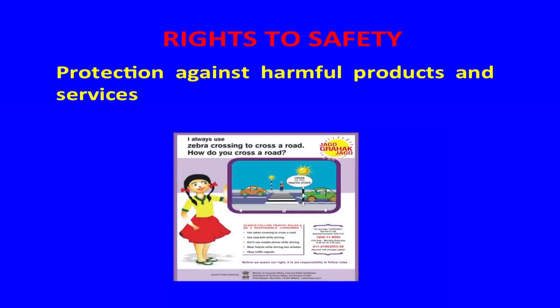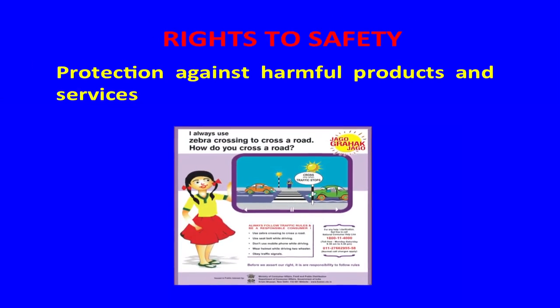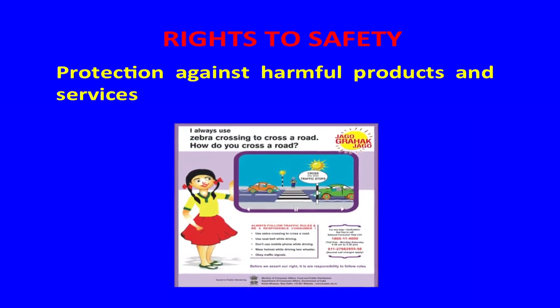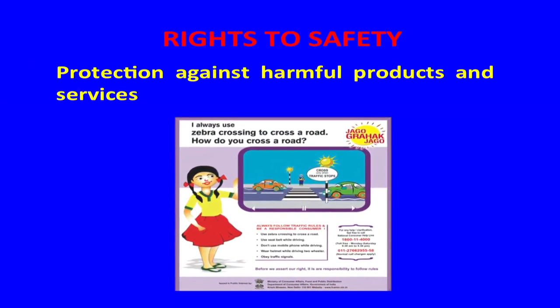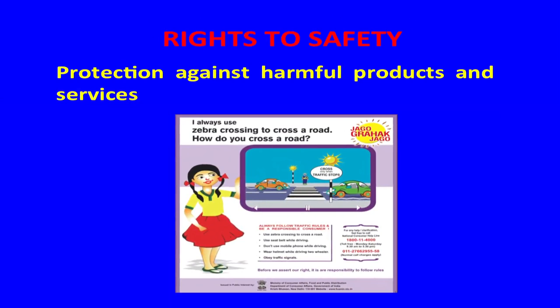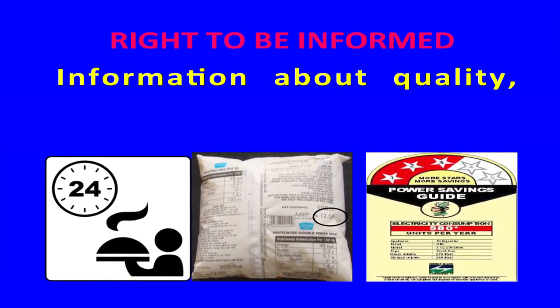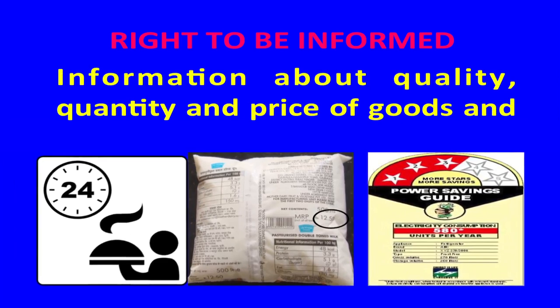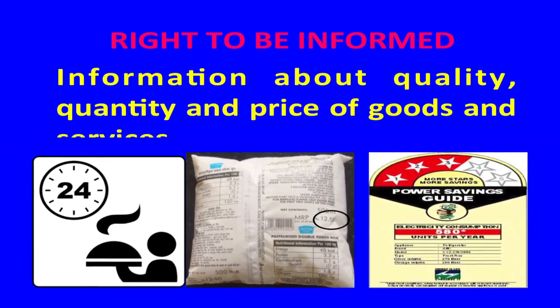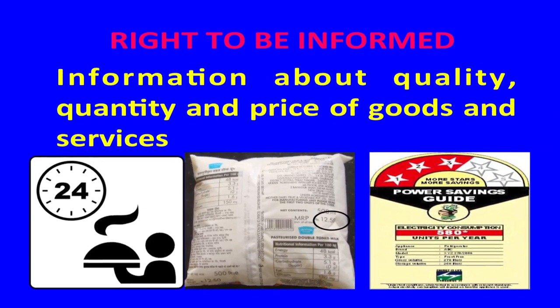Right to safety means protection against harmful products and services. It also includes protection from adulteration. Right to be informed covers information about quality, quantity, and price of goods and services. Quality includes the ingredients available, quantity includes the weight, and price includes the MRP.